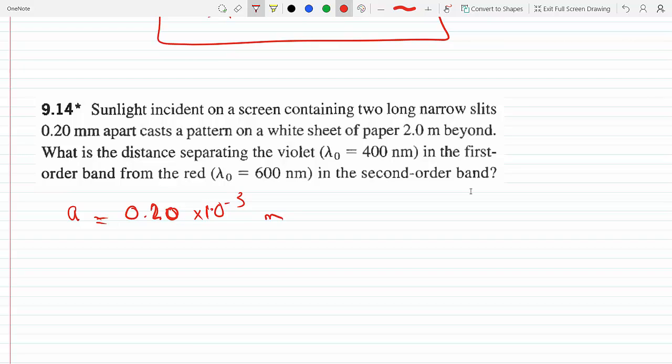On a white sheet two meters beyond, this is beyond the source, so that's where the screen is. So s is two meters, and we have the wavelength for violet in the first order band, so violet is in the first order band, that's m equals one.